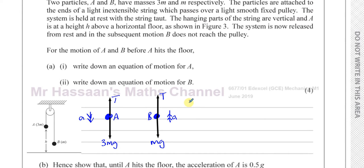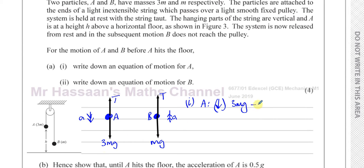The equation of motion for A: taking downward as positive, we get 3MG minus T equals 3MA. That's the resultant force equals mass times acceleration.